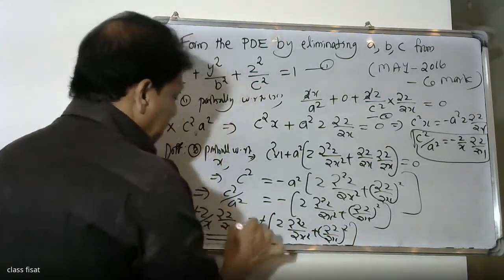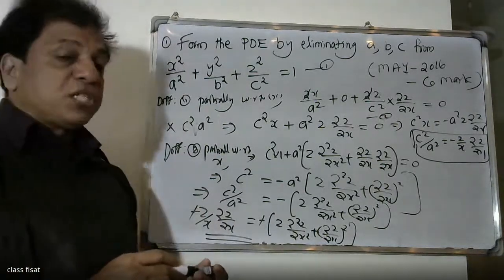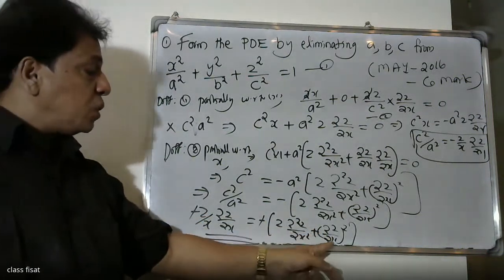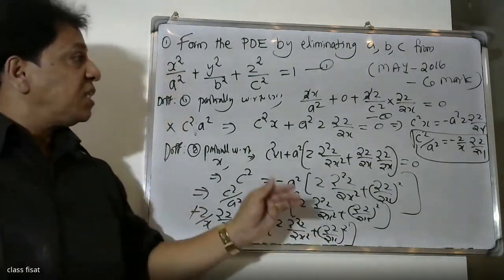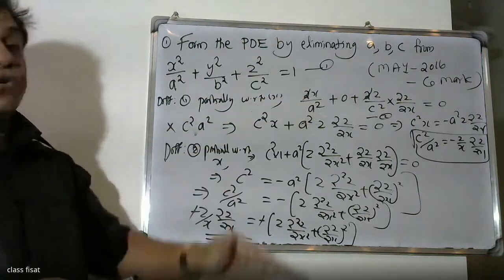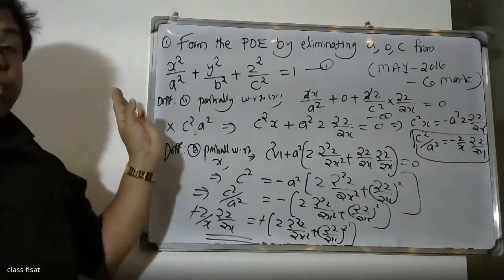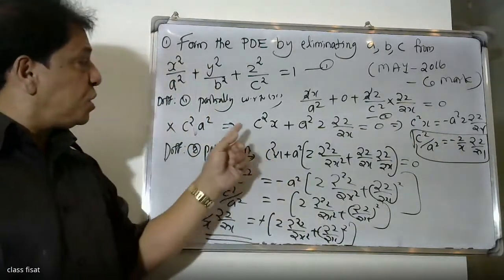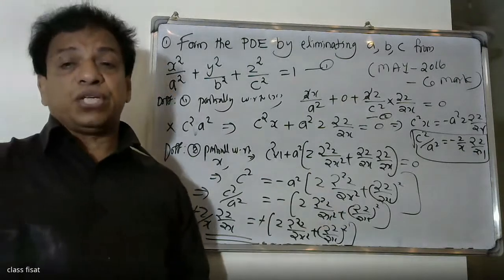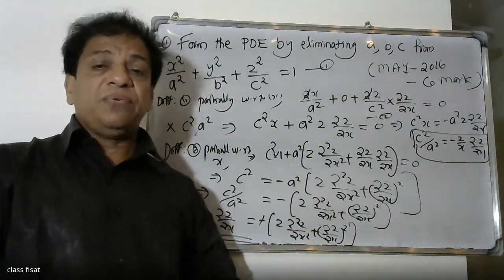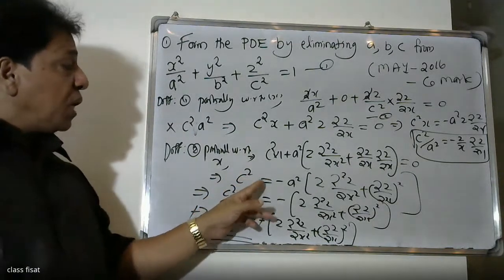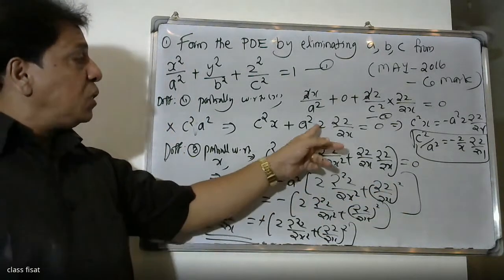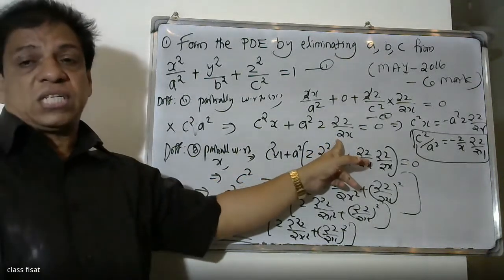Applying minus by minus and the second order differentiation: minus z by x times dou z by dou x, also multiplied by dou squared z by dou x squared plus dou z by dou x. We differentiate x away. We have c squared equal to minus a squared times dou squared z by dou x squared plus dou z by dou x squared. Therefore we need the product rule for differentiation, with UV as the first function.